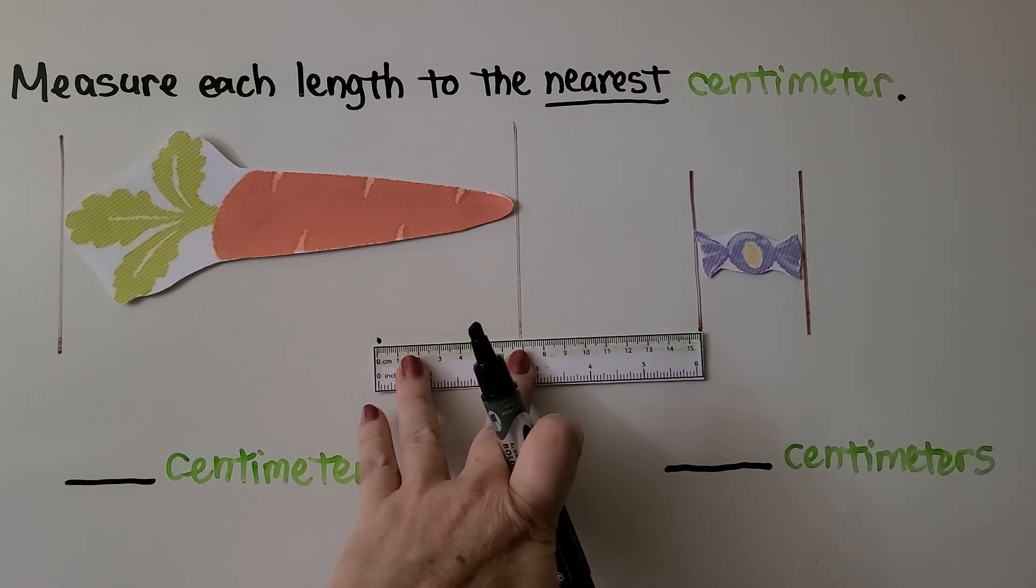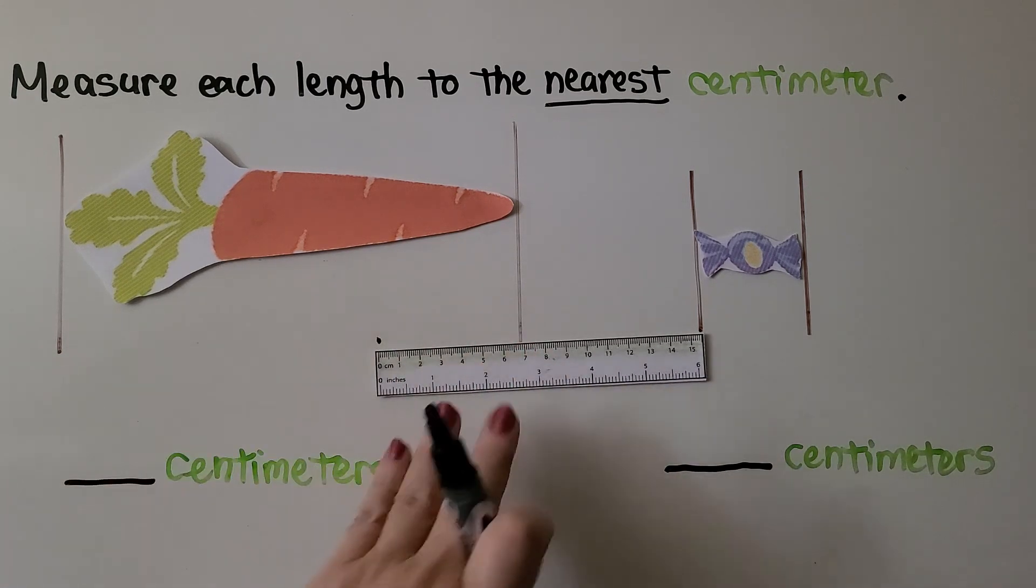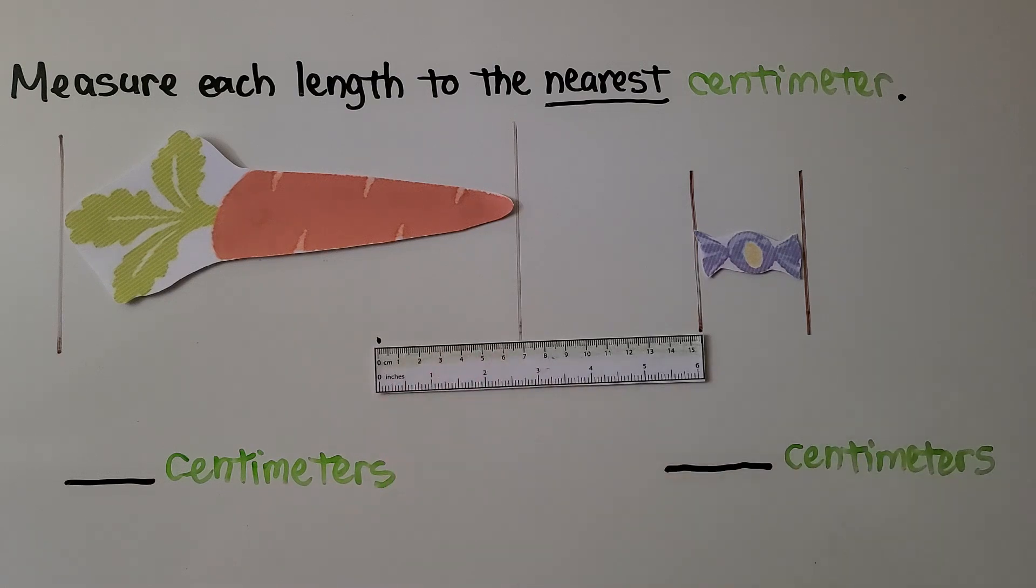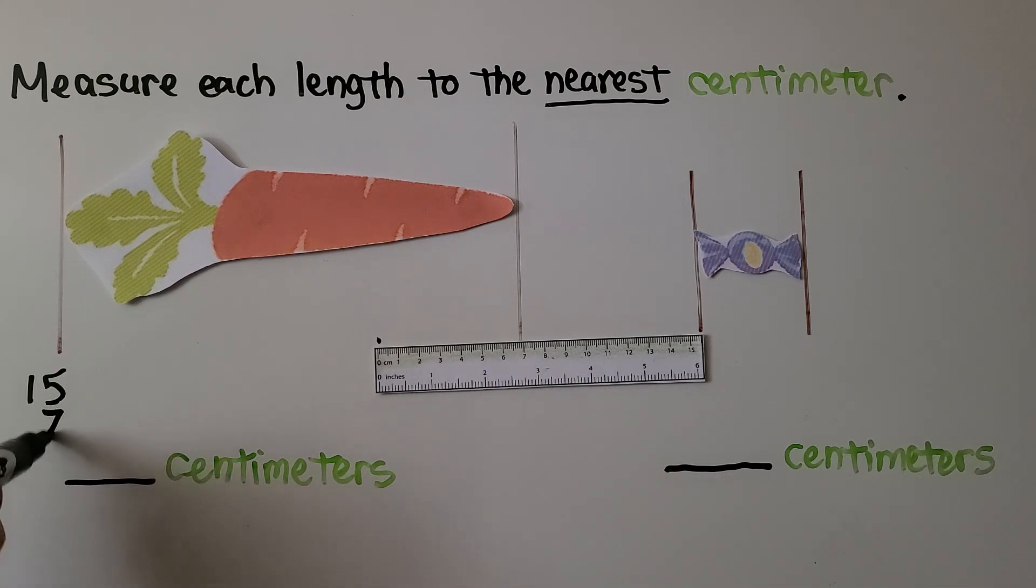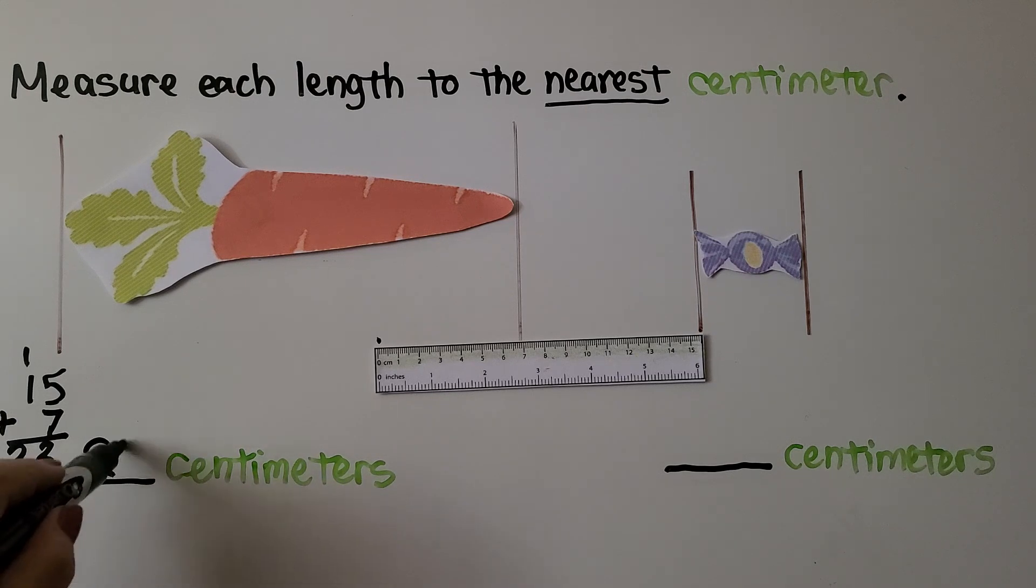So now we have 15 and that's a 7, so we're going to add 15 and 7. Seven plus 5 is 12, we regroup the 10, put the 2 down, we have 2 tens, it's 22 centimeters. We added the 15, we slid the ruler over and then added that 7.